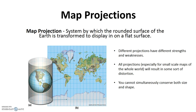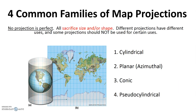Mapmakers use map projections to transfer the rounded system of the earth onto a flat piece of paper. We will see that there are many types of map projections, but none is suitable for all purposes. Rather, each has its own best uses and its own pros and cons. Although there are hundreds of different types of map projections, we can lump many of them into one of the following four families of map projections.